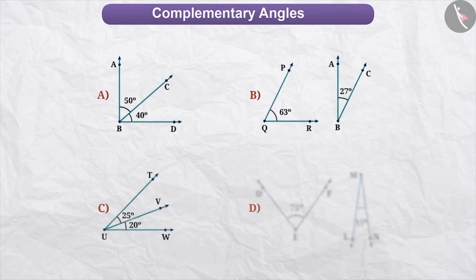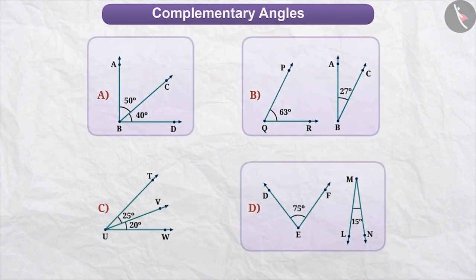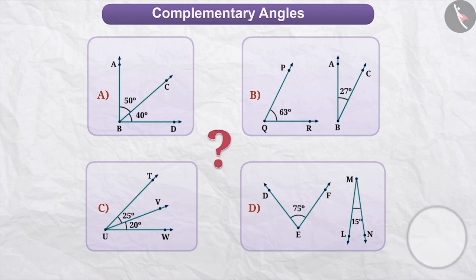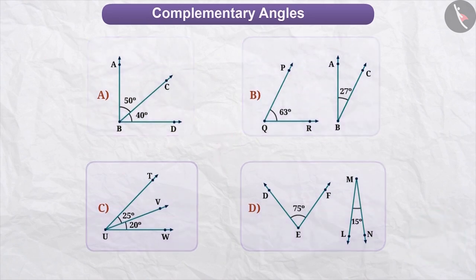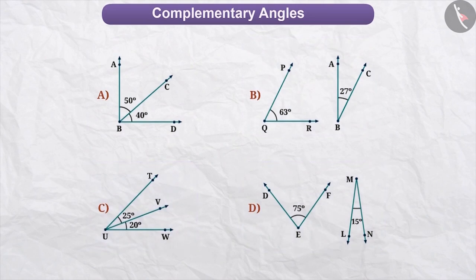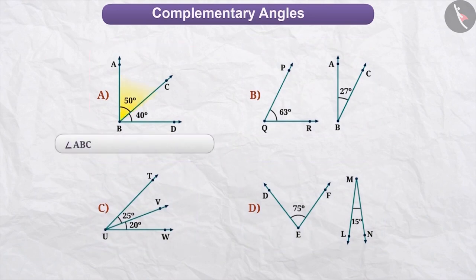Here, some figures are given. Out of these figures, three of them share a special relation but the fourth one is different from the rest. Can you identify what that relation is? Pause the video and try to find the answer. There are two angles in each figure. In the first figure, the sum of angle ABC and angle CBD is 50 degrees plus 40 degrees, which is equal to 90 degrees.